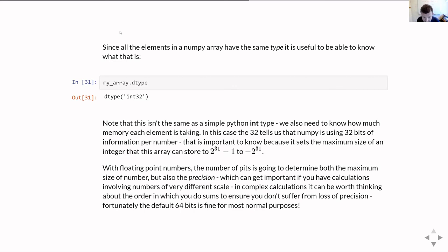With floating point numbers, the number of bits is going to determine both the maximum size of the number, but also the precision. The way the floating point numbers are stored by the computer is you have a certain number of bits that are used to store the mantissa. So if you think about how you'd write down a number in scientific notation, the bit before times 10 to the whatever, the 5.317, that's the mantissa. So you have a certain number of bits to store that, and then you have a certain number of bits to store the exponent. So again, in scientific notation, that would be the times 10 to the minus 31. The minus 31 is the exponent.